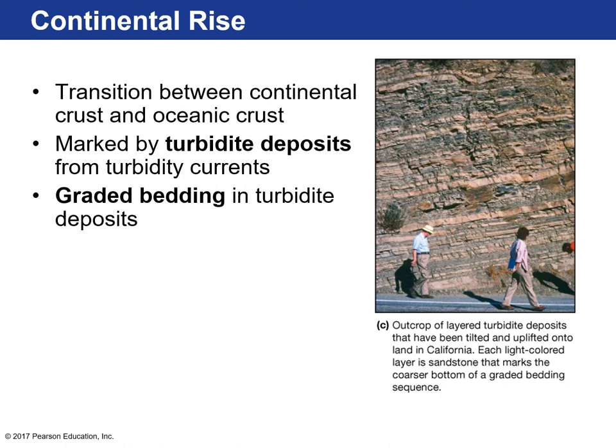Over time, that sediment can become compacted and form sedimentary rock — we call those turbidite deposits. We often find these on land in areas with a convergent plate boundary, which forces sedimentary rocks from the ocean floor up onto land. On the coast of California, rocks in the background are a series of turbidity currents preserved in what we call graded bedding.